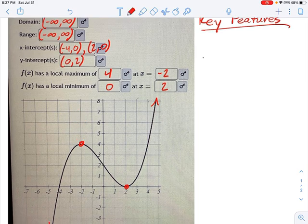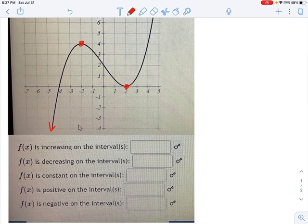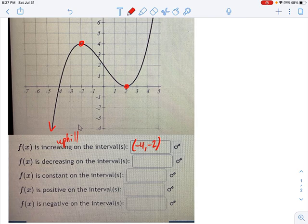All right, so moving on, let's talk about increasing, decreasing. This just means uphill. And where is the function uphill? That's from negative infinity to negative 2 union... I'm sorry, that's not negative 4. That is negative infinity. I was looking at the x-intercept. Negative infinity, because this is all uphill. This whole thing's uphill here.